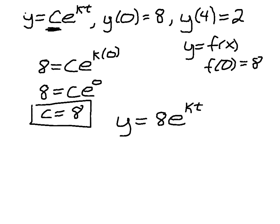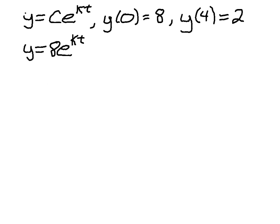And so now what I'm going to do is move on and use the second given piece of information. So I'm starting here with y equals 8e to the KT, and I'm going to use this piece of information to solve for K.